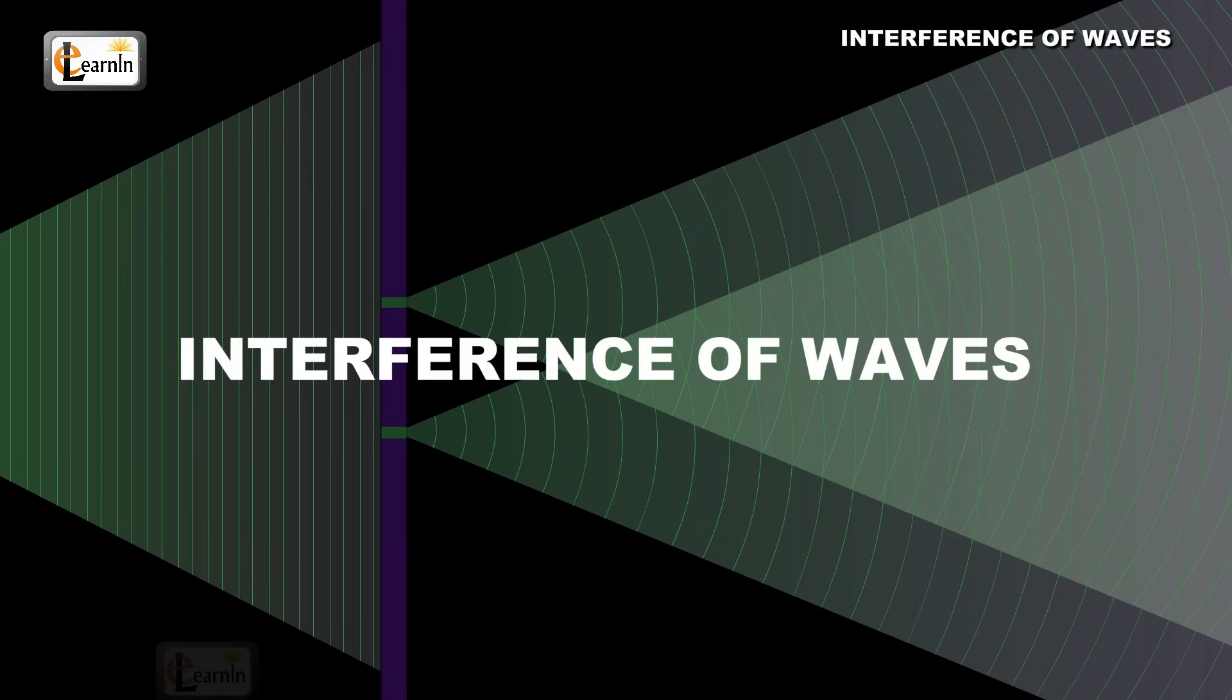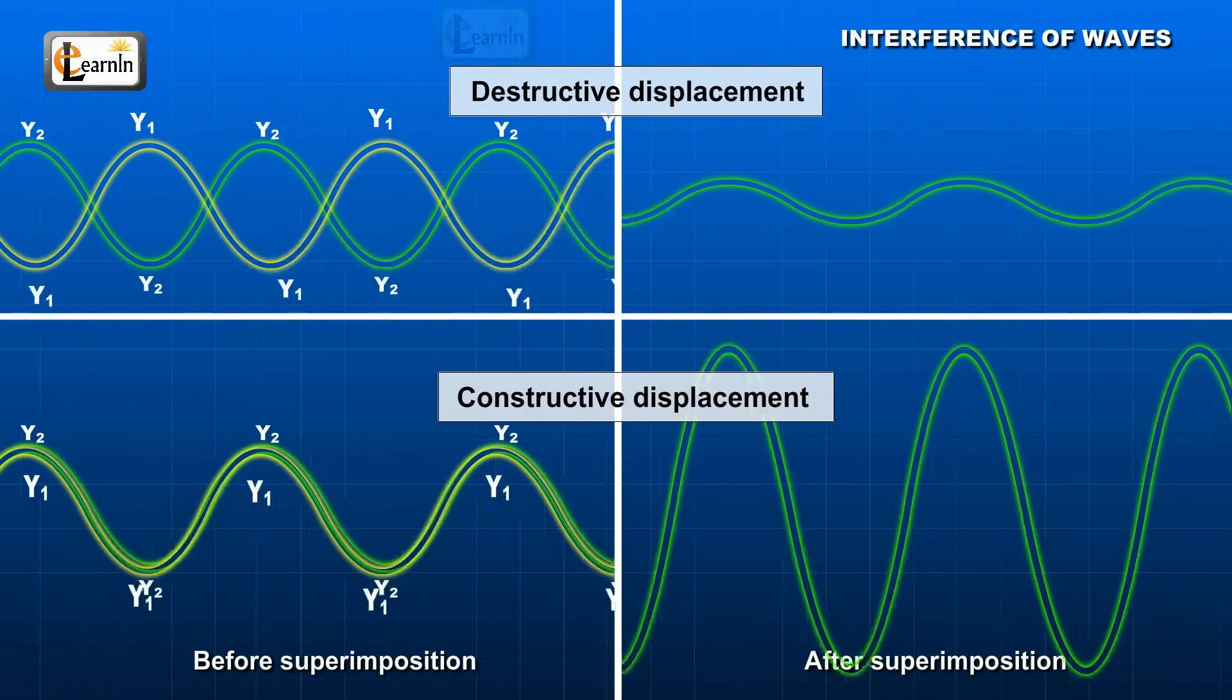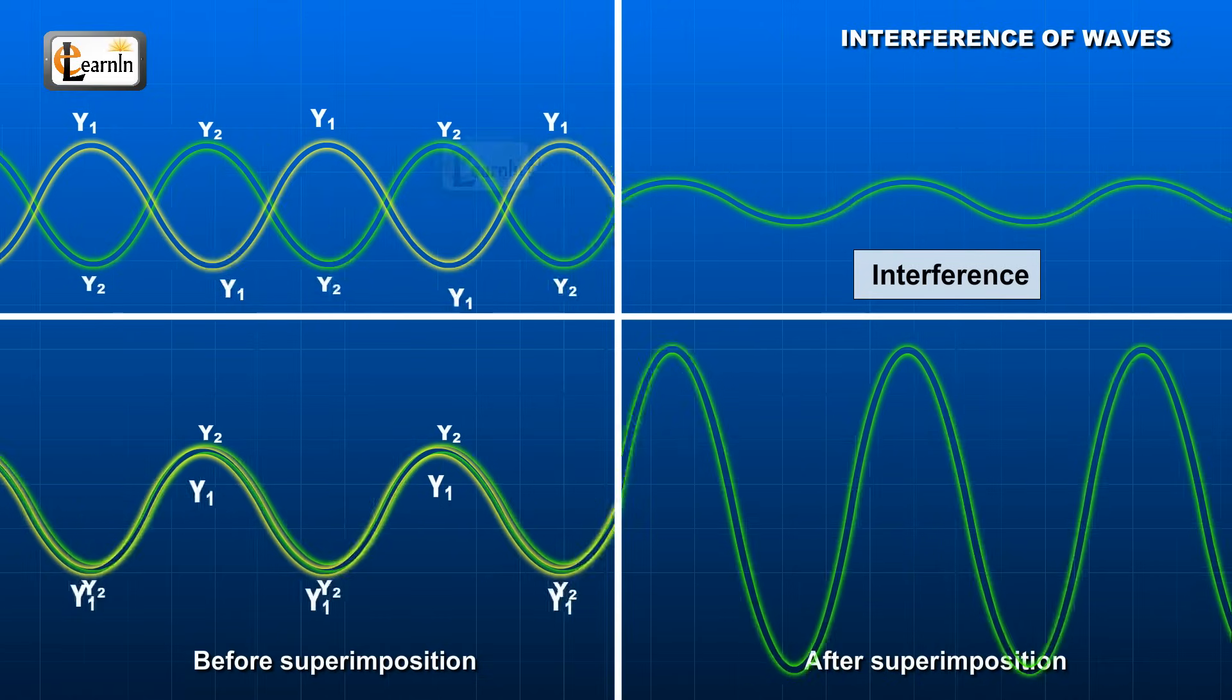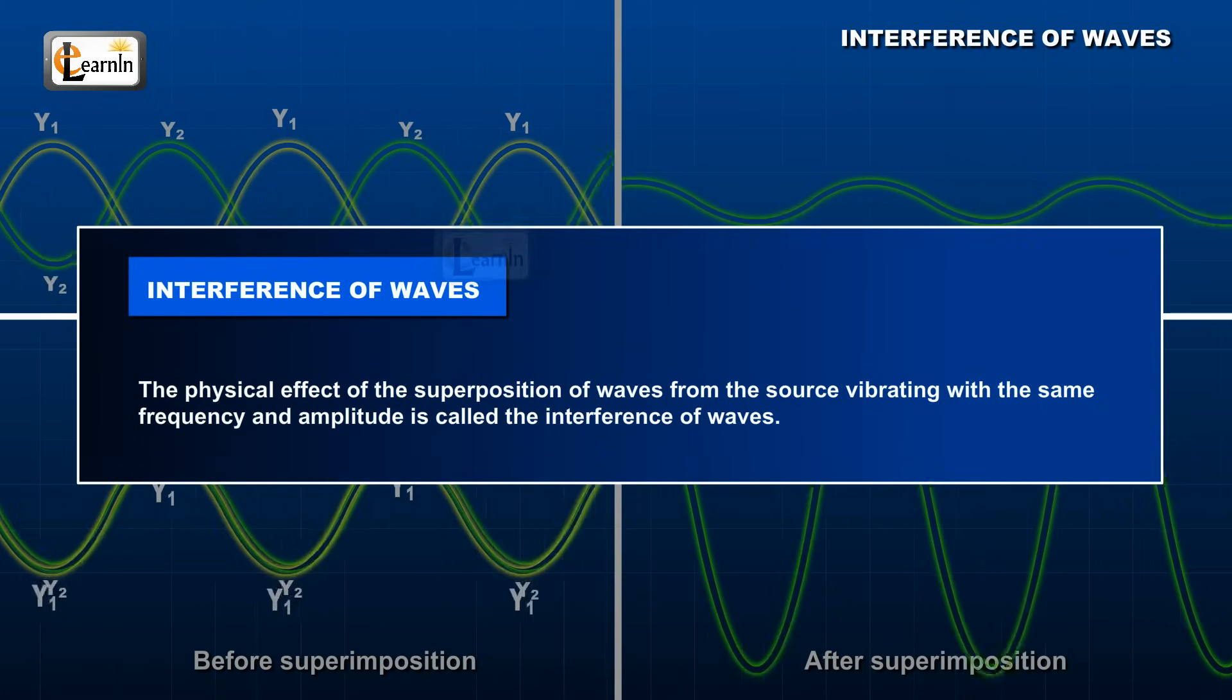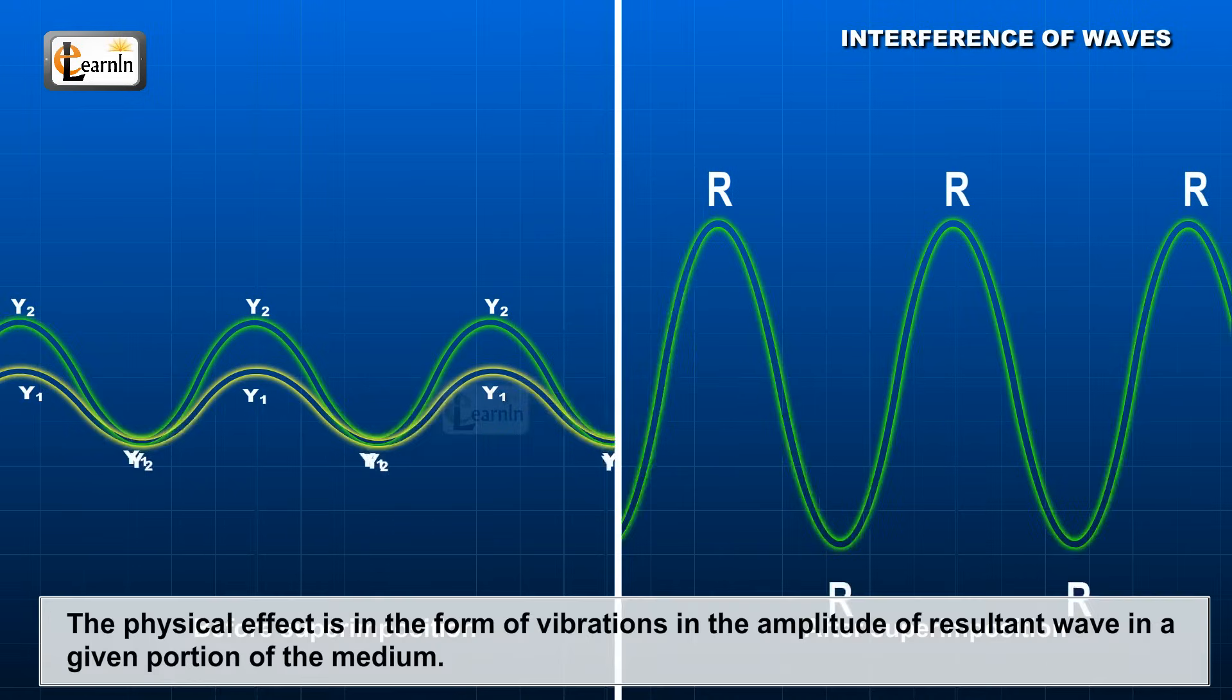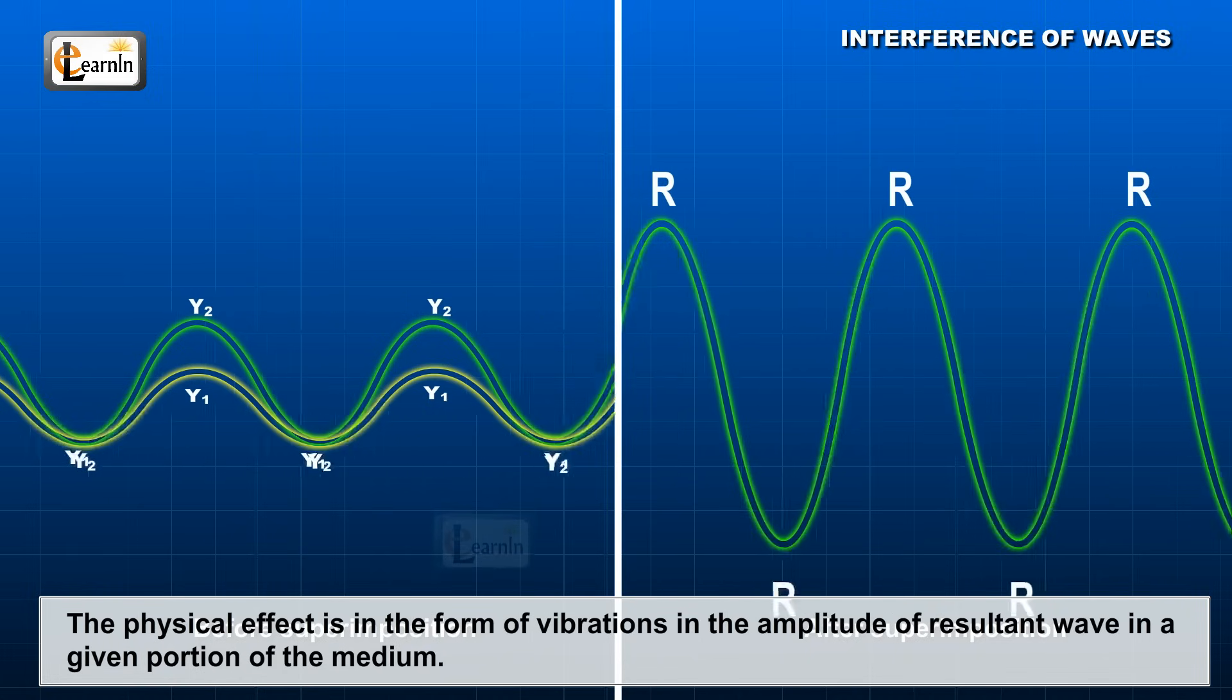Interference of waves. When superposition of waves occur, they can be destructive or constructive. This physical effect, observed as a result of the superposition of waves, is called interference. The physical effect of the superposition of waves from the source vibrating with the same frequency and amplitude is called the interference of waves. The physical effect is in the form of vibrations in the amplitude of the resultant wave in a given portion of the medium.